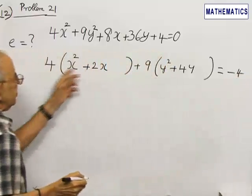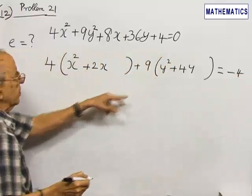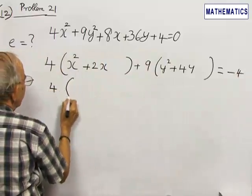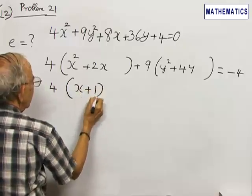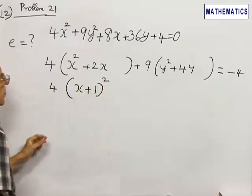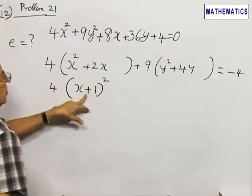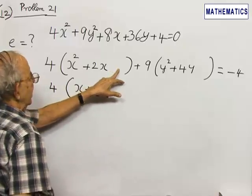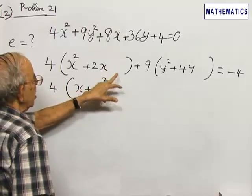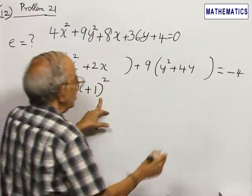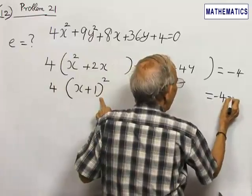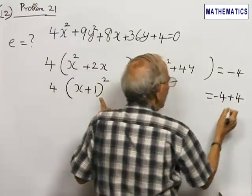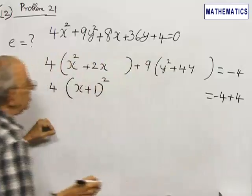Let us complete the square. 4 times this can be rewritten as (x + 1)². So I have added extra 4 on the left hand side. To compensate for that I will add +4 on the right hand side.